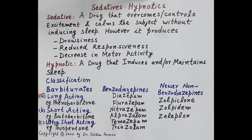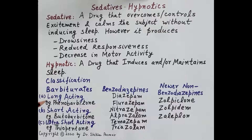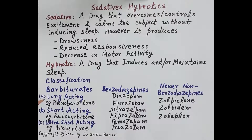Barbiturate is a prototype of CNS depressant. There are three subcategories: long-acting barbiturates (e.g., phenobarbitone), short-acting barbiturates (e.g., butobarbitone), and ultra short-acting barbiturates (e.g., thiopentone). Because of their ability to produce profound CNS depression and the availability of better-tolerated drugs with lower abuse liability, barbiturates are not clinically used for the treatment of insomnia.